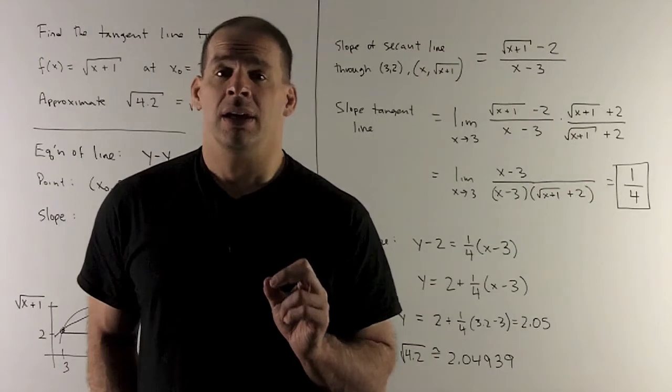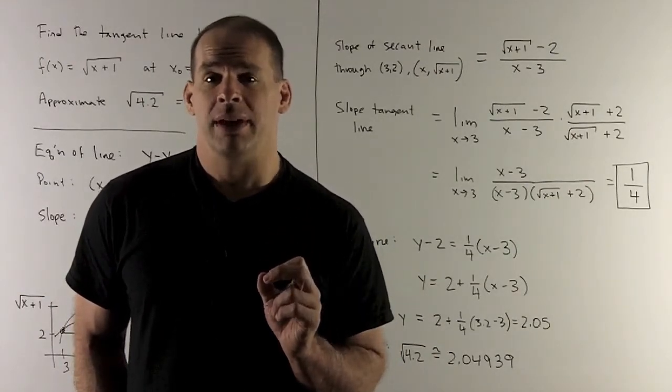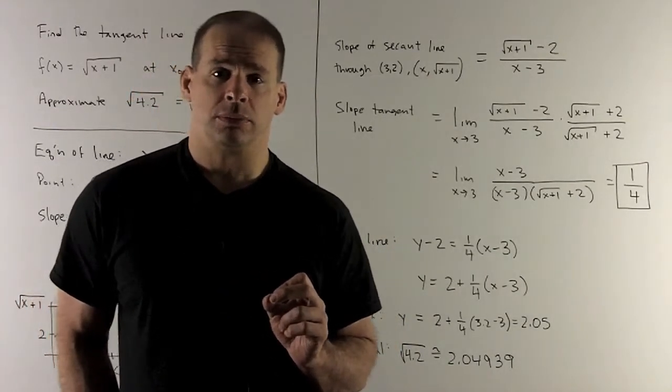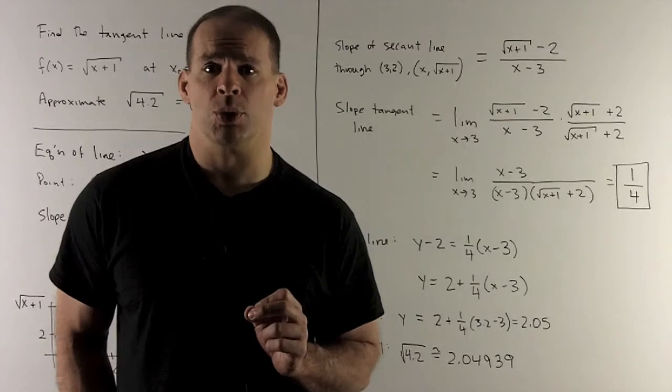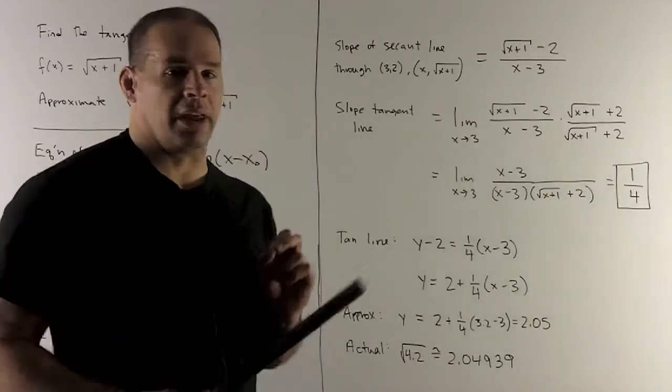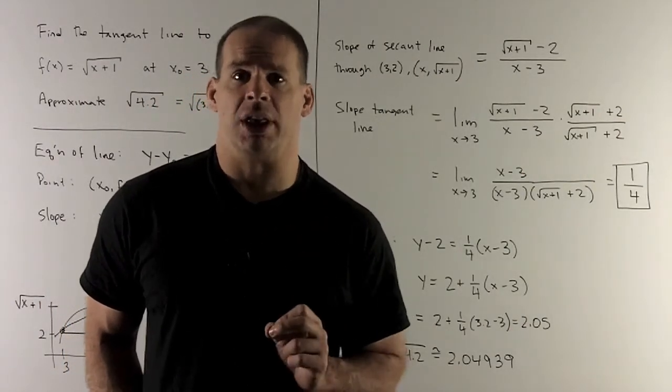So now all I need to do is take our slope, take our point, stick them into the equation of the line, and that's what we're looking for. So I'm going to wind up with y - 2 = (1/4)(x - 3). And then I can push the 2 to the other side to get something we can work with. So that's my tangent line.